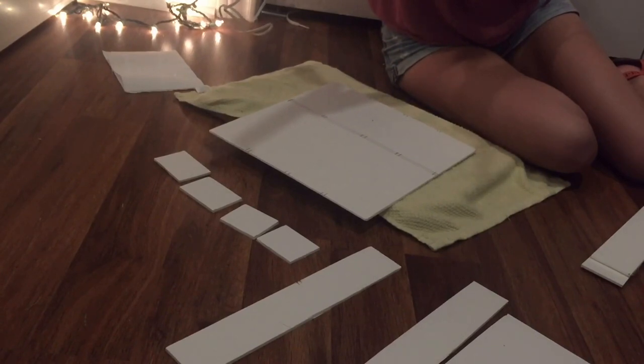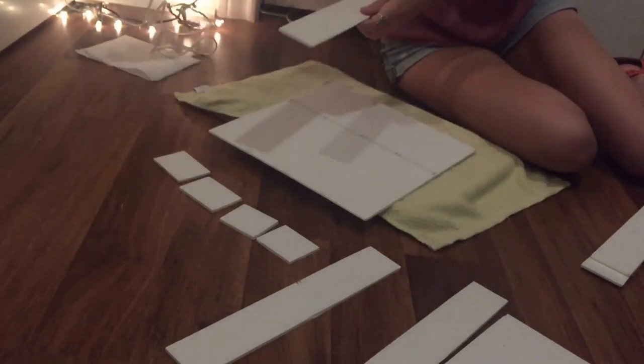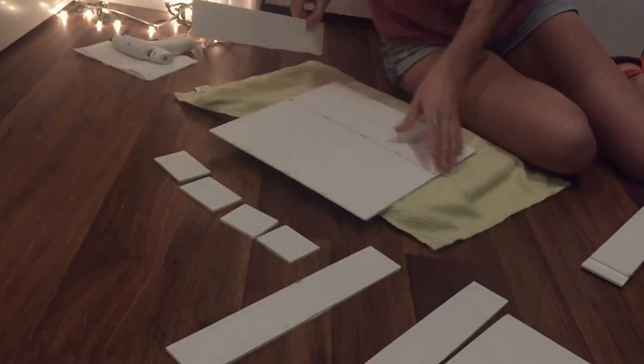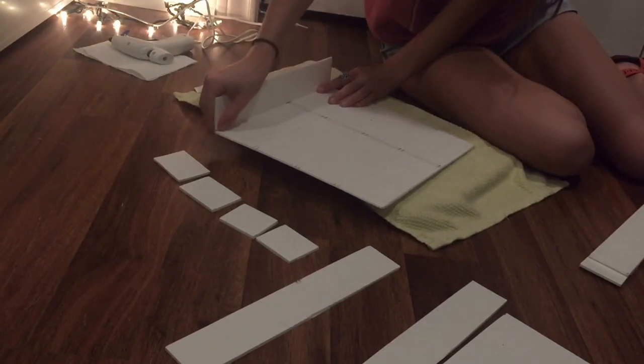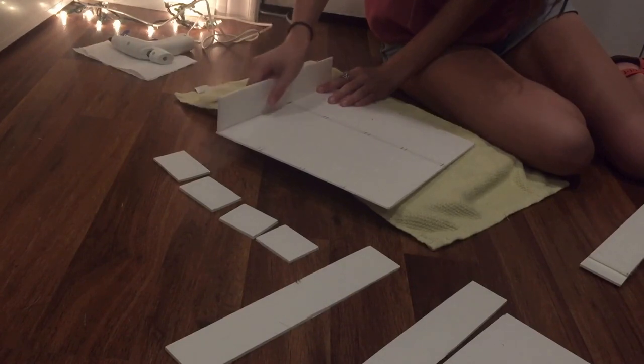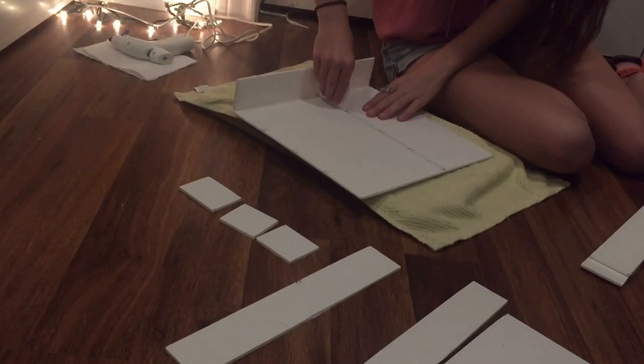After you completed making your small dividers we're going to start putting it together. I'm going to be working from left to right and I'm going to start by hot gluing down my first outside board. Moving on to the next piece you just want to flip it around and find where it lays best. This is typically the smoothest side.